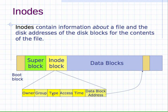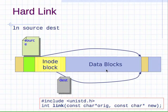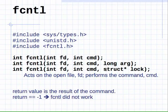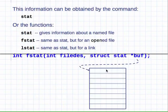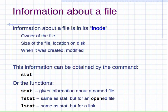The information about a file is all stored in one place — this inode table. Information about files in a particular directory is stored in the data blocks themselves, so keep that picture in mind. Information about a file in its inode includes things such as the owner of the file, size of the file, location on disk, when it was created, when it was modified, when it was last accessed, and so on. This information can be obtained using the command-line command `stat`.